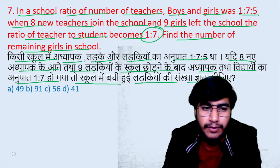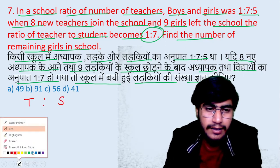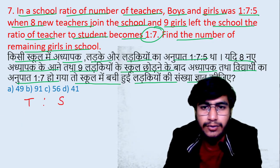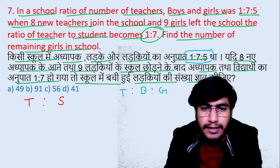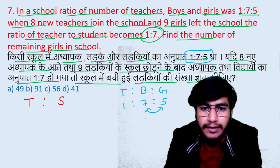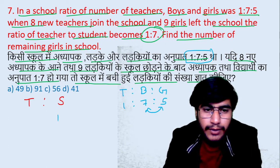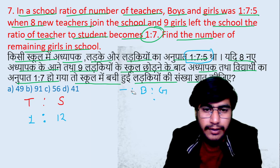Dekho, question number 7 solution. Yahaan pe aapan ko final ratio diya hai — teachers aur students ka. To aapan pehle teachers aur students ka initial ratio bhi nikaal lenge. Teachers, boys, aur girls ka ratio kya diya? 1 ratio 7 ratio 5. Boys aur girls dono mila ke kya honge? Students. To student total kya hoga? 12 hoga. Teacher kya? 1. Initial ratio aa gaya teacher aur student ka — 1 ratio 12. Theek hai? Yahan tak koi dikkat nahi?